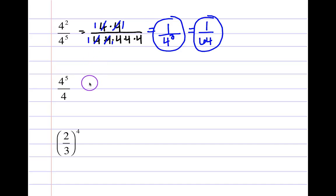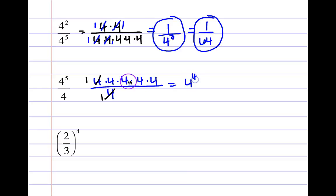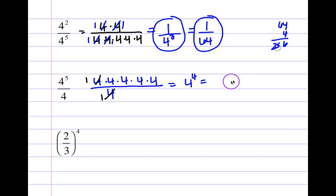For the next problem, four to the fifth over four: repeat four five times on top, and just one four on the bottom. Cross-cancel — four divided by four is one, four divided by four is one — leaving four fours remaining. So the answer in exponential form is four to the fourth power. If asked to evaluate: 64 times four equals 256. It all depends on the instructions.